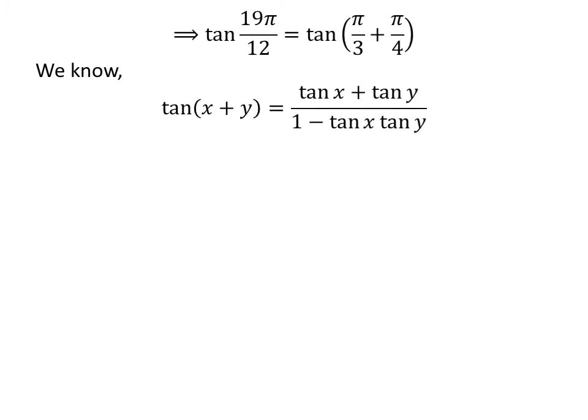We know the trigonometry identity tangent of x plus y is equal to tangent of x plus tangent of y upon 1 minus tangent of x times tangent of y. The proof of this identity is given in the video appearing in the upper right corner, and the link is also given in the description section.